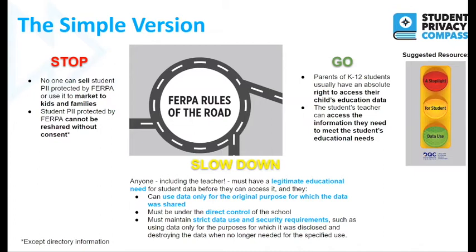For our yellow light: anyone, including the teacher, needs to have a legitimate educational need for student data before they can access it, and they can only use data for the original purpose for which it was shared. That person and their use of the data must be under the direct control of the school and they must maintain strict data use and security requirements — using data only for the purposes for which it was disclosed and destroying it when no longer needed.